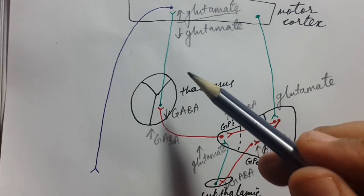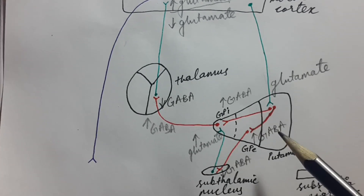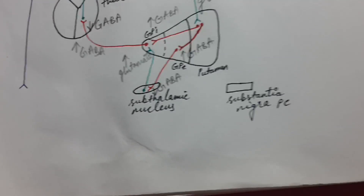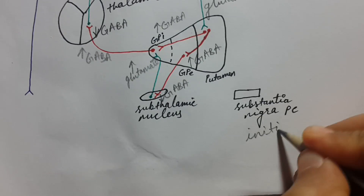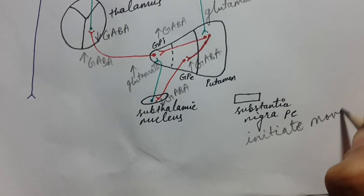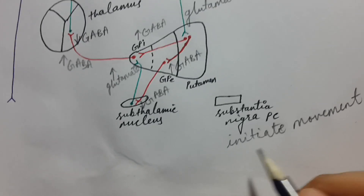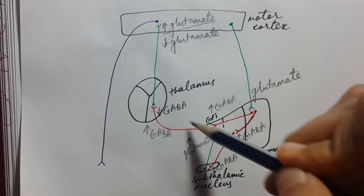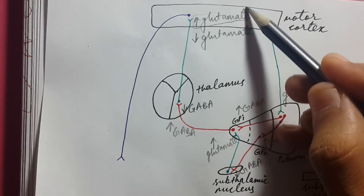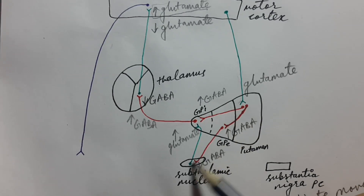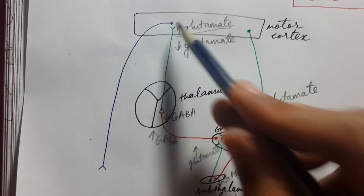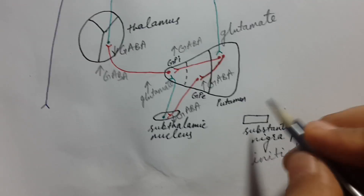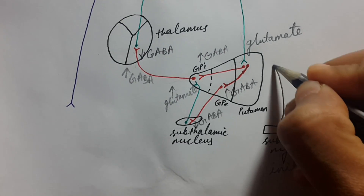For fine tuning, proper regulation, and initiation of movement, we have substantia nigra. Its main function is to initiate movement. To do this, it must stimulate the direct pathway and inhibit the indirect pathway — because we want movement to occur, so the inhibitory (indirect) pathway must be suppressed. Substantia nigra releases dopamine at both the direct and indirect pathway connection points.